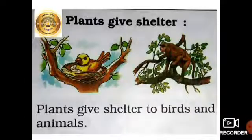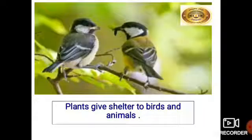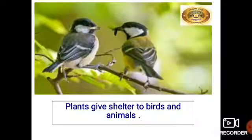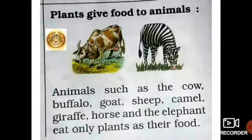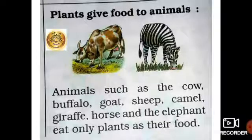Plants give shelter to birds and animals — just like how we live in our houses, birds and animals also live in forests and make their homes there. Plants also give food to animals. Animals such as the cow, buffalo, goat, sheep, camel, giraffe, horse, and elephant eat only plants as their food.